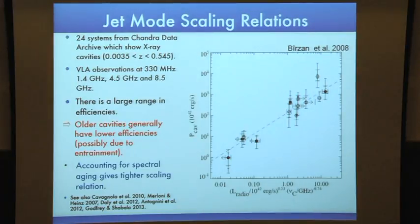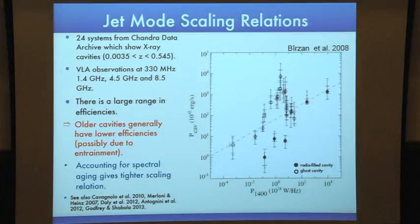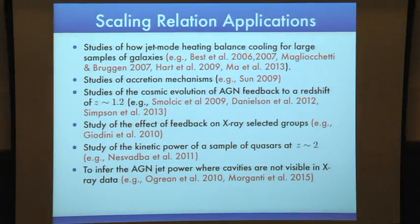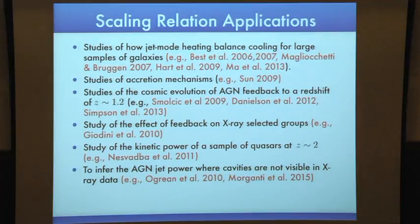LOFAR can improve a lot in constraining the spectral break, since our current lower frequency limit is 330 MHz. We also derived the relation between cavity power and monochromatic radio luminosity to be used for surveys like NVSS. There are lots of applications for this kind of relation, from finding AGN jet power in individual systems to using large samples.